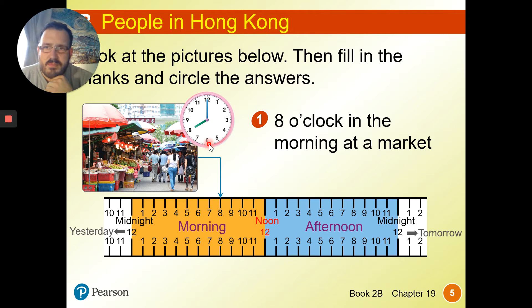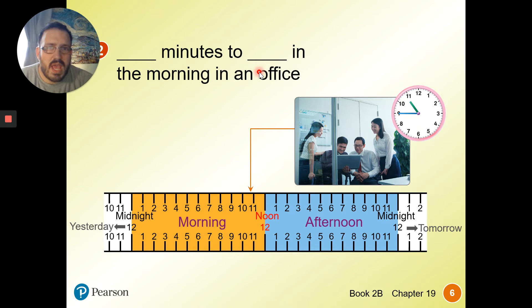Look at these pictures below, and then fill in the blanks. So 8 o'clock in the morning, that goes about here in the morning. What time is it at the office? We can see on our clock it's 5, 10, 15 minutes to the next hour which is 11. 15 minutes to 11.